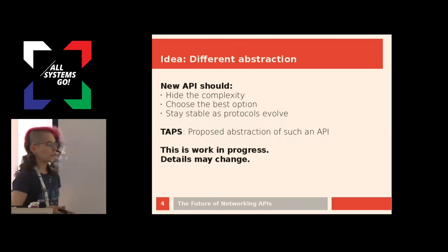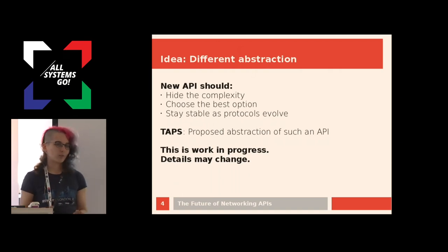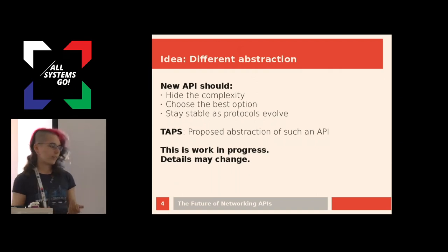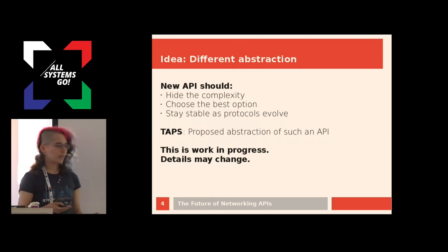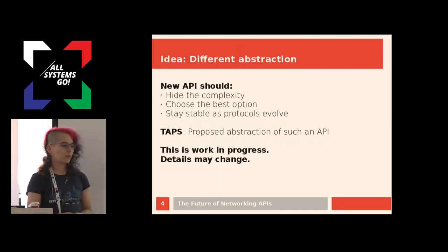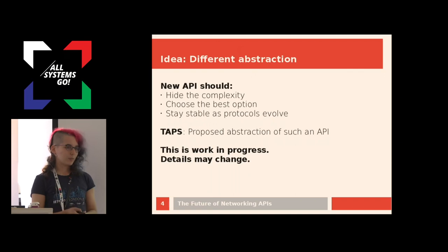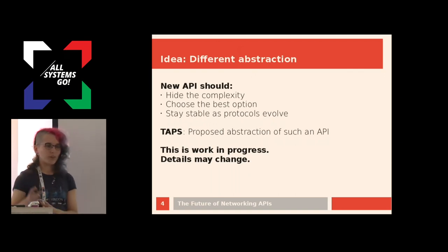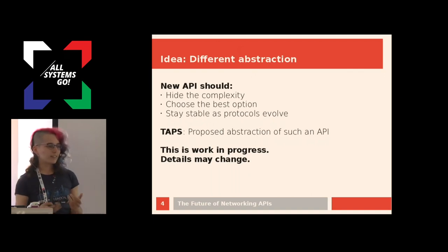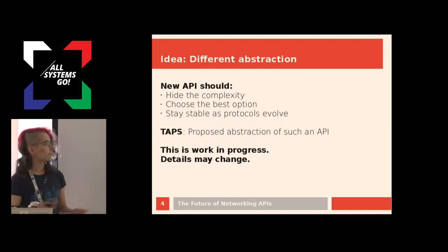It would be nice to choose the best option. We are not always sure which is the best option — that is part of the research that I'm doing. But there should be some way within or beneath this API to optimise these choices. Also, our API should stay stable if new protocols are being developed. Now we have QUIC as a new transport protocol; we don't know, maybe this is the start of a new family of transport protocols. But does the application have to change if a new protocol is developed? Well, it shouldn't.